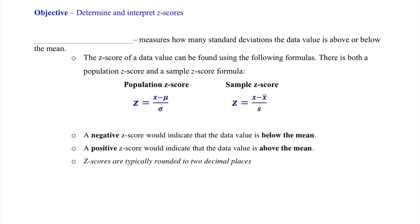Jumping into our objective then, a z-score measures how many standard deviations the data value is above or below the mean. Just to repeat, because it's easily forgotten, remember, it's how many standard deviations a data value is above or below a mean. We see the formulas below.